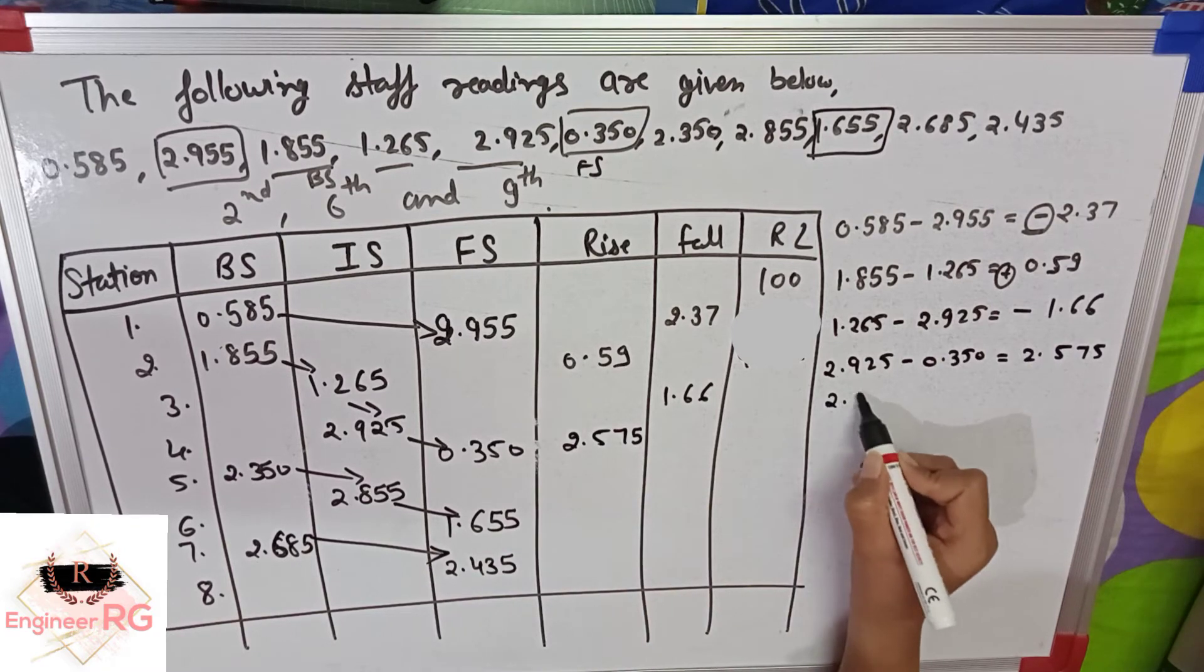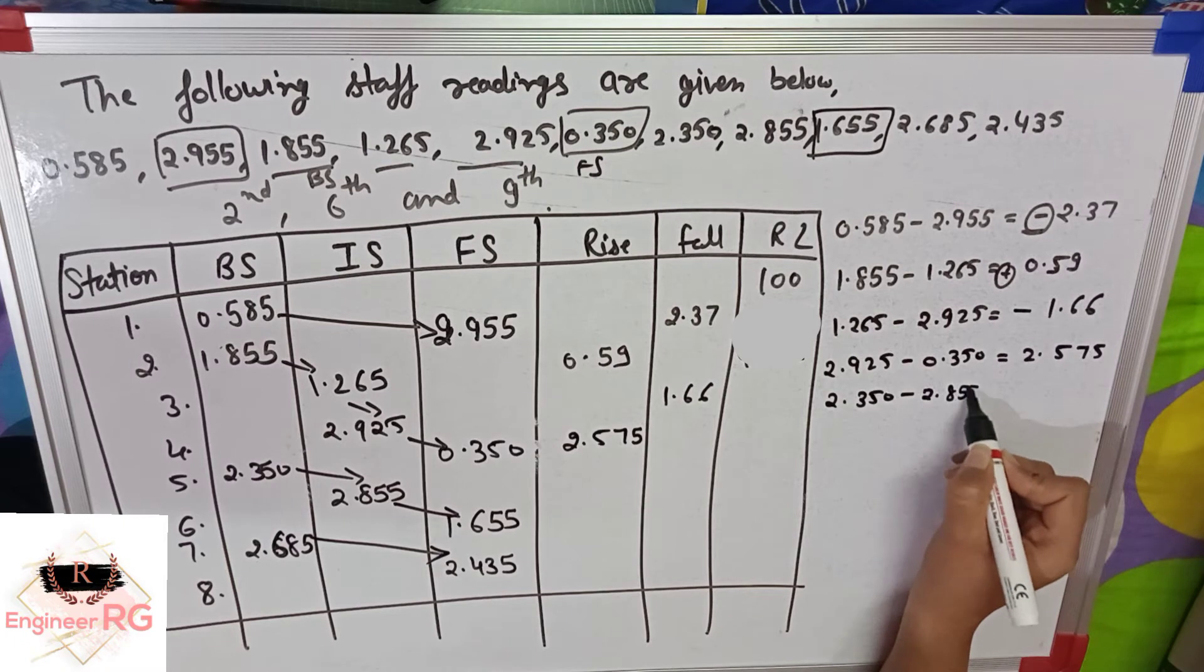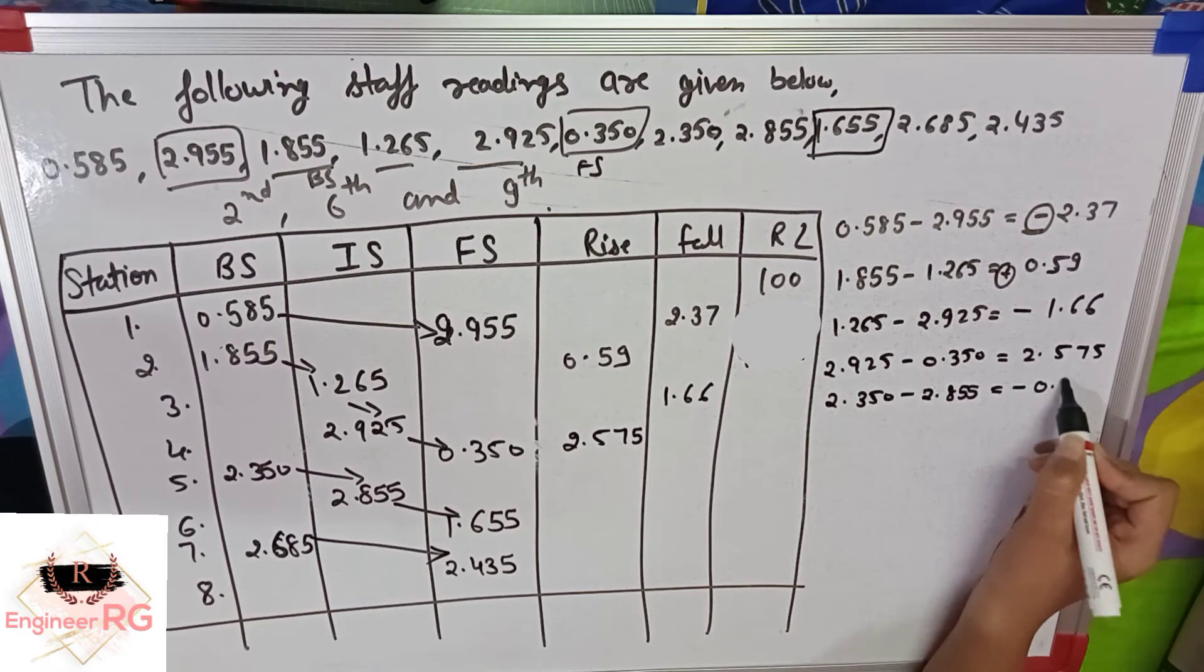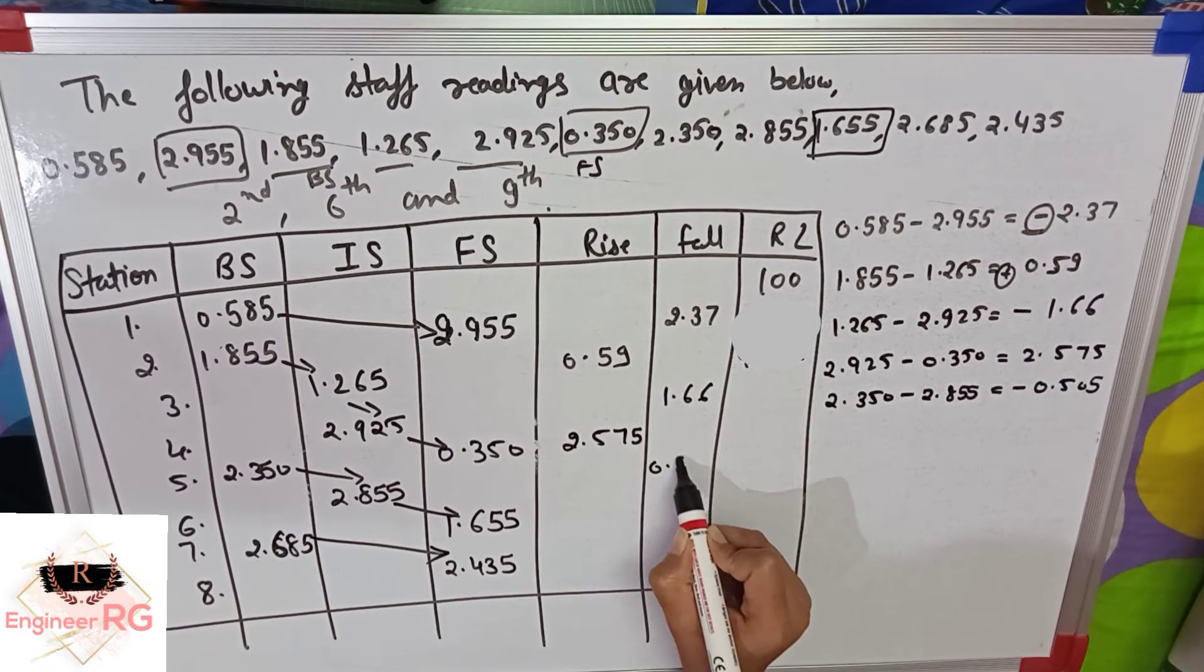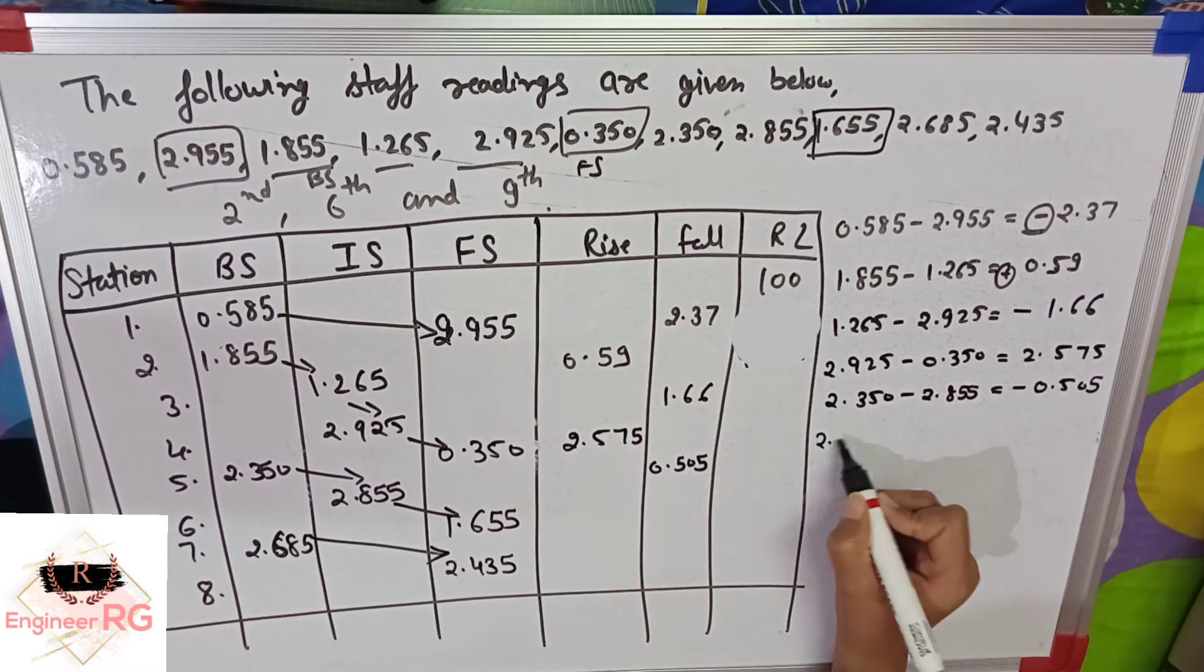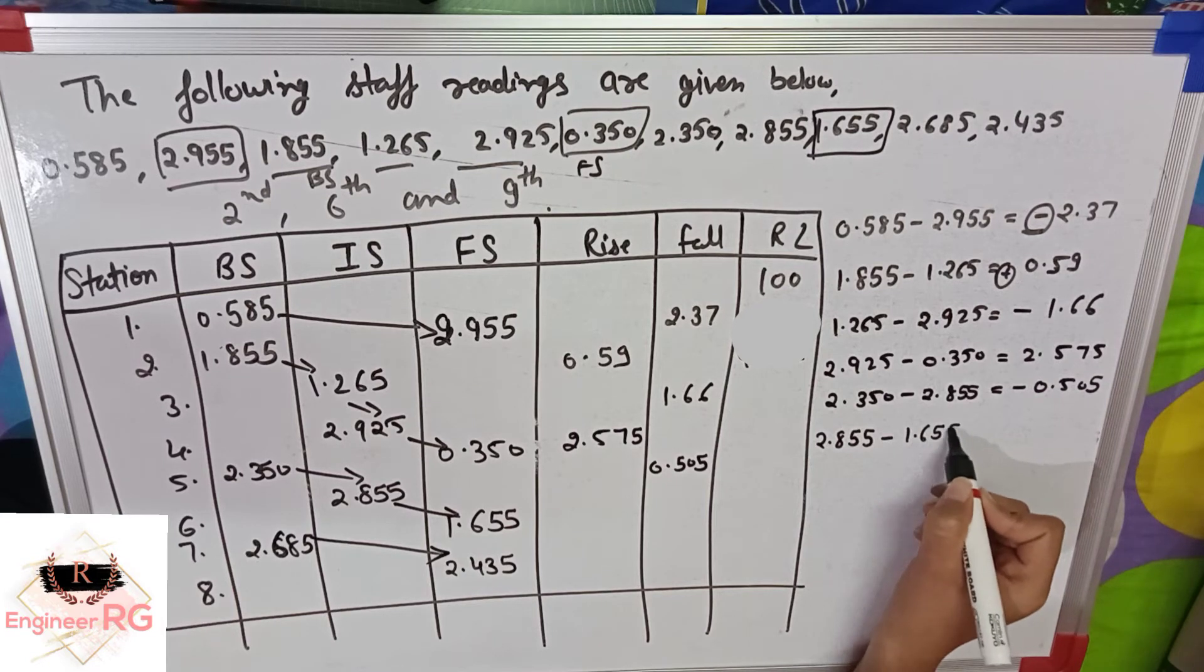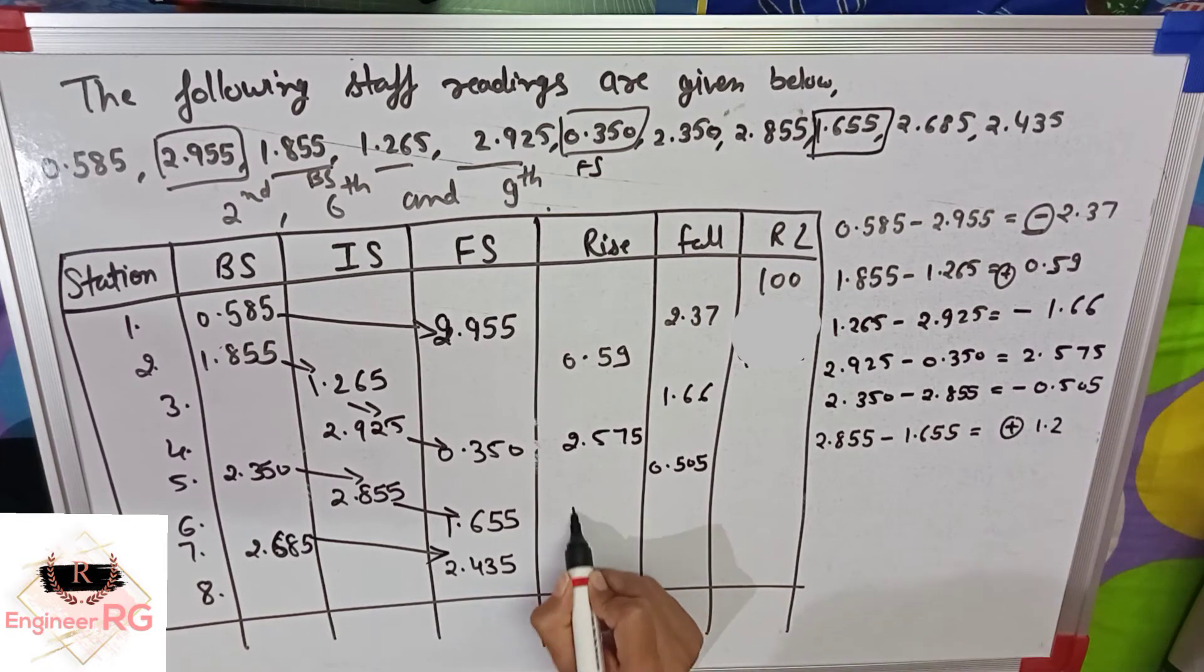Then, 2.350 minus 2.855, the value is negative, 0.505. Fall. 2.855 minus 1.655 is equal to positive value, 1.2. Rise.